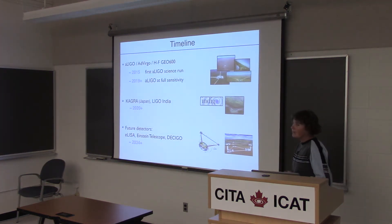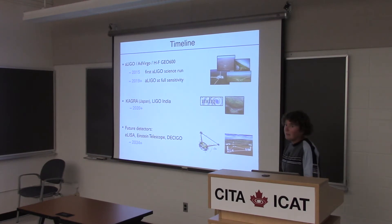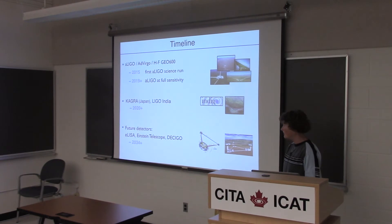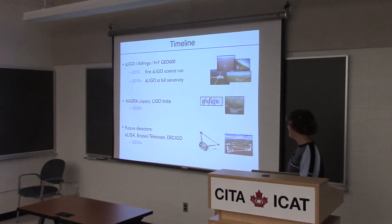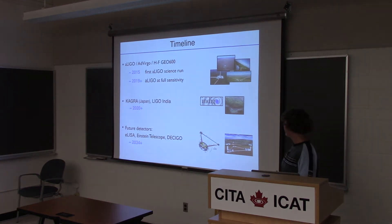The timeline is that in early 2015, advanced LIGO should be ready and should start a first science run. They won't be at design sensitivity yet, but they'll gradually improve, and by about 2019 they should reach design sensitivity. Around that time there are also two detectors planned, one in Japan and one in India, which will give better sky coverage so that sources can be localized better.